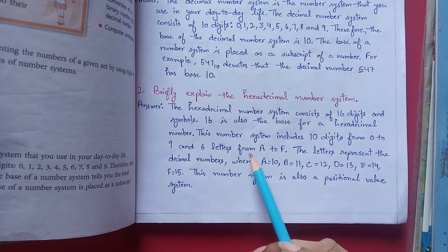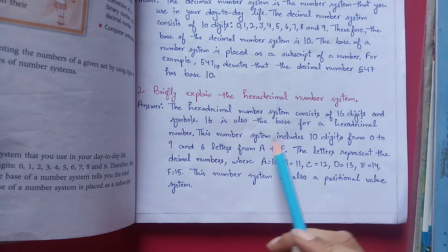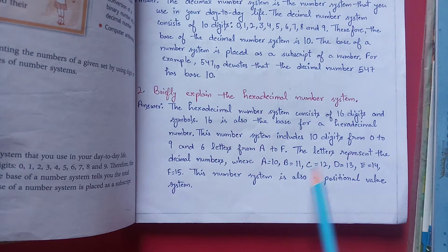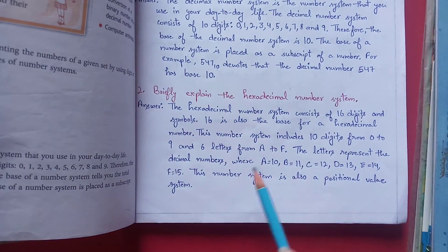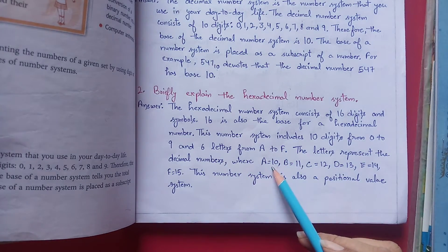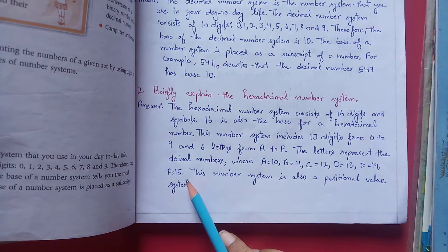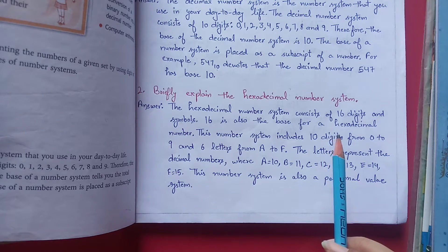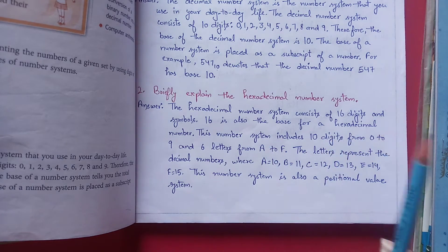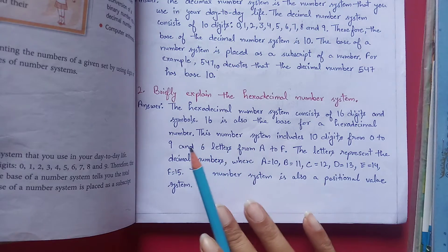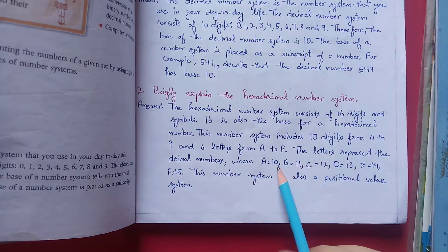And 6 letters that is A to F. The letters represent decimal numbers. So A represents 10, B is 11, C is 12, D is 13, E is 14, and F is 15. So we can say that total digits are 16, that is from 0 to 15. 10 digits aur 6 letters hain.